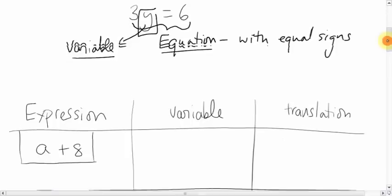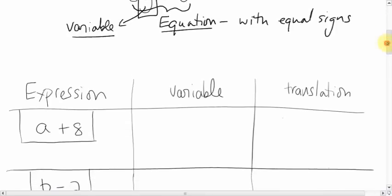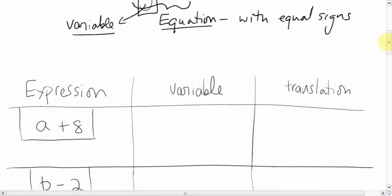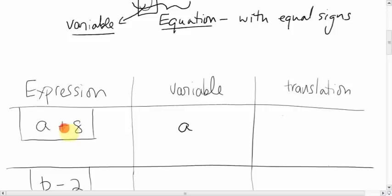We're going to stick with expressions here and come to equations later. I just want to get used to talking algebra style. So if you have 'A plus 8,' what does that mean? What's the variable? Obviously it's A. It's some missing number plus 8. Why do we use A? No reason — it just felt like it. You could use X, Q, Z, capital G — it doesn't matter.